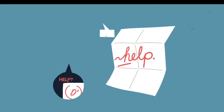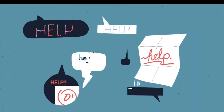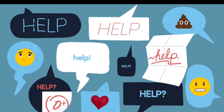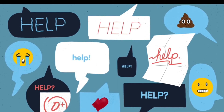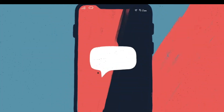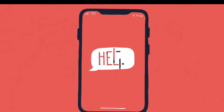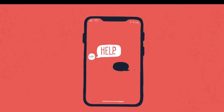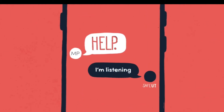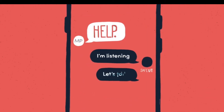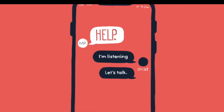When we ask for help, it can have a lot of meanings — especially when it comes to our emotions. Safe UT is a no-cost, confidential app that connects you with a licensed counselor who's there to help you through any sized struggle you may be going through.